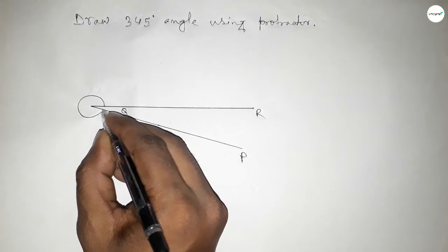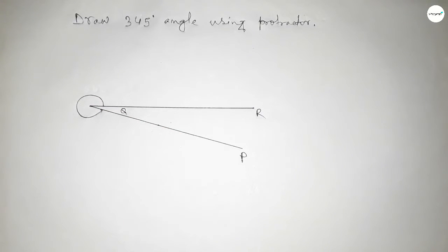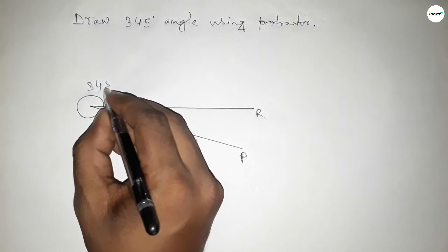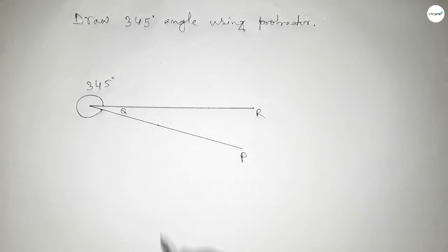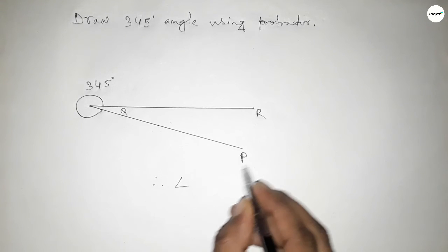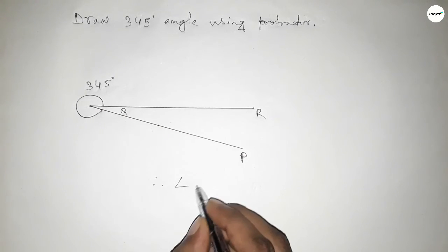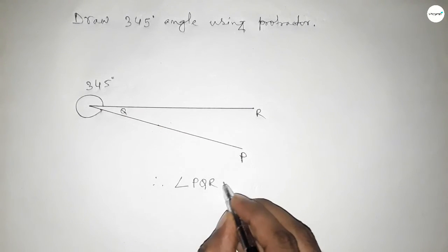And this is angle PQR and this is 345 degree angle. So therefore, angle PQR equal to we can write 345 degree. That's all.